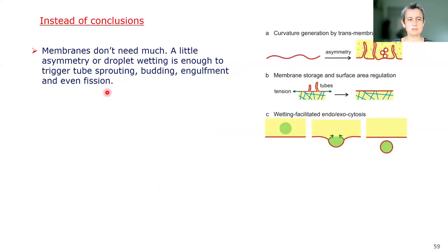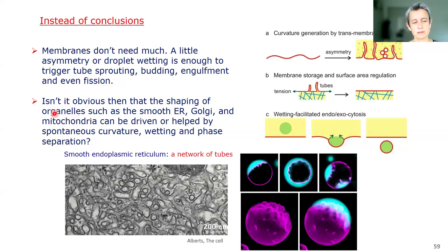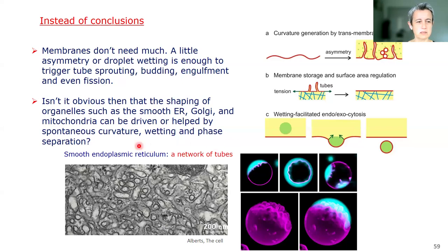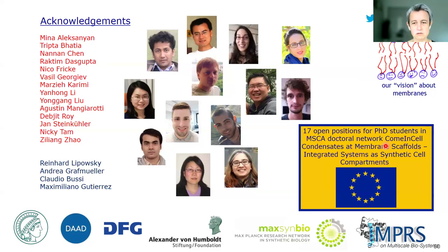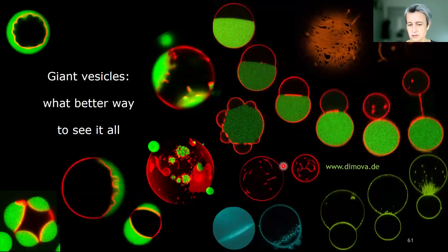In conclusion: membranes don't need much — a little asymmetry or a droplet wetting is enough to trigger tube sprouting, budding, engulfment, and even repair. Isn't it then obvious that shaping of organelles such as the endoplasmic reticulum, Golgi, or mitochondria can be driven not only by protein functionality but also by physicochemical factors such as spontaneous curvature generation, wetting, and phase separation? We are setting up a network called CellOnCo — condensate membrane scaffold — with 17 open PhD positions. Thank you for your attention.